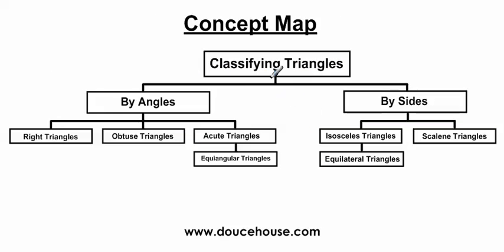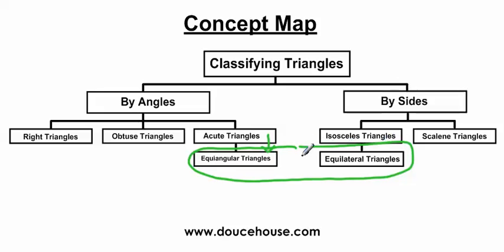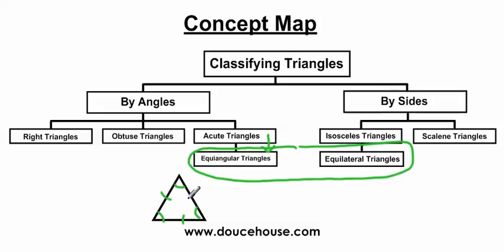To wrap things up: classifying triangles by angles, we have the right triangle, the obtuse triangle, the acute triangle, and the special kind of acute triangle — the equiangular triangle. Classifying by sides, we have the isosceles triangle, the scalene triangle, and the equilateral triangle. Keep in mind that equiangular and equilateral go together — if a triangle is equiangular, all angles are congruent, which means all sides must be congruent as well. Hopefully this helps you understand the different kinds of triangles and different ways to classify them. Have a good day!